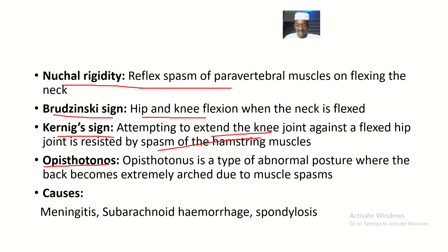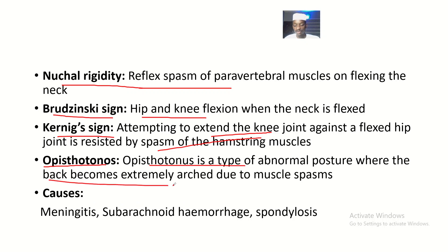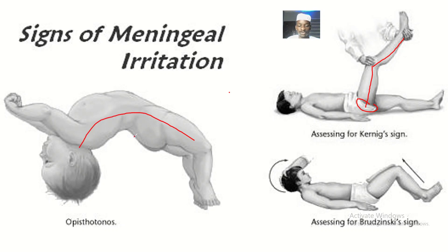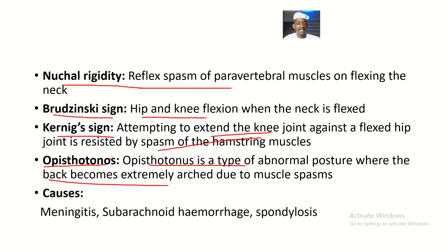Opisthotonus is where you check if the back is bent or if there is pain in the back. It is a type of abnormal posture where the back becomes extremely arched due to muscle spasm — you can see this illustrated with a baby. You can also try to bend the individual to see if they complain of pain or show resistance. If there is abnormal arching of the back or too much pain, the opisthotonus sign is positive.